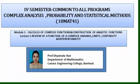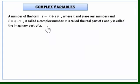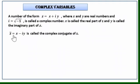What is a complex number? If x and y are two real numbers, then any number of the form z = x + iy, where i = √(-1), is called a complex number. Here x is called the real part of z and y is called the imaginary part of z. If z = x + iy, then z̄ = x - iy is called the complex conjugate of z.